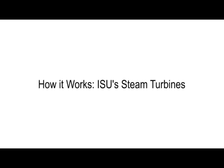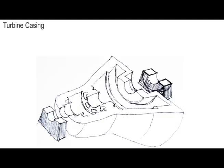How it Works: ISU's Steam Turbines. The turbine casing is used to hold all the pieces in place and provide a container for the steam as it moves through the turbine.